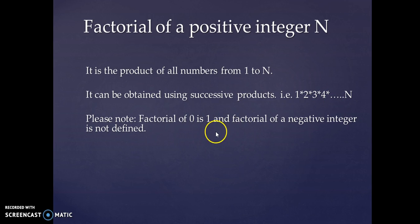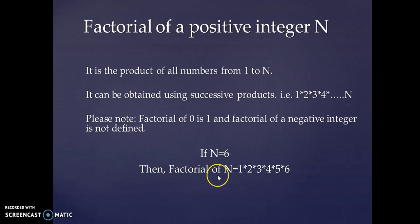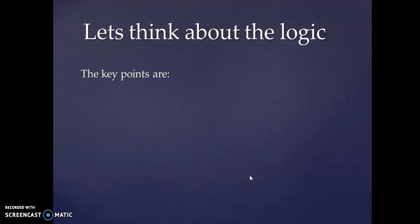Please note that factorial of 0 is 1, and factorial of a negative integer is not defined. If a variable n is 6, then the factorial of n will be the product of 1, 2, 3, 4, 5, and 6.